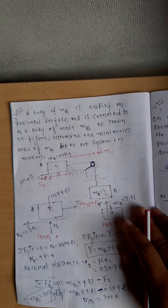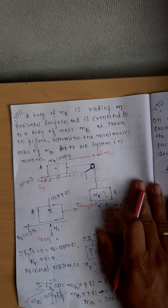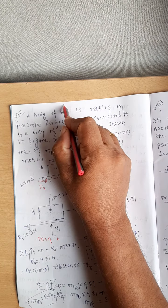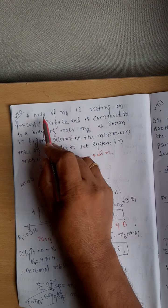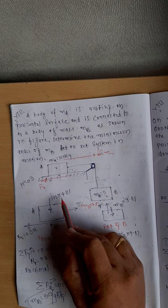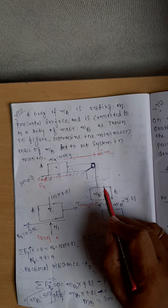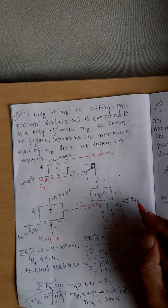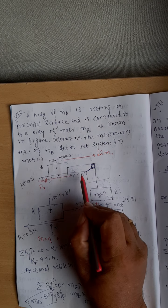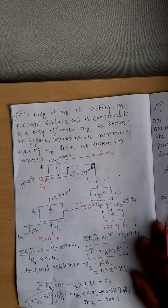We are starting with the fourth lecture on friction — block friction, continuation. The steps we need to adopt in friction problems: first, we need to see in what way the blocks may move based on the forces acting on it. Based on that, decide the direction of motion, then decide the direction of friction, then draw the free-body diagram of the blocks.